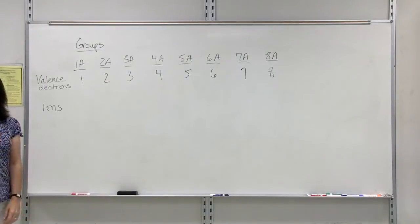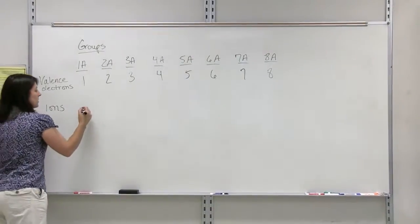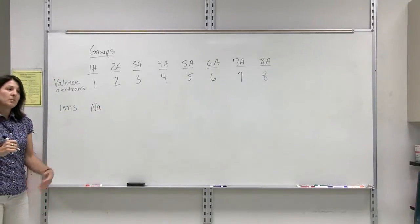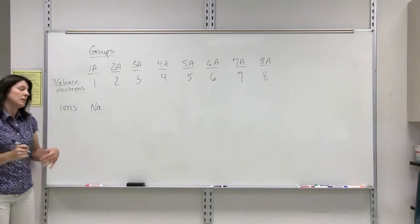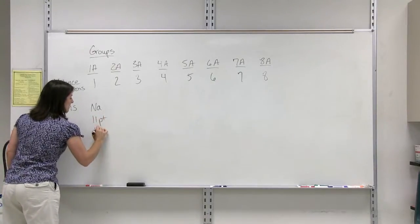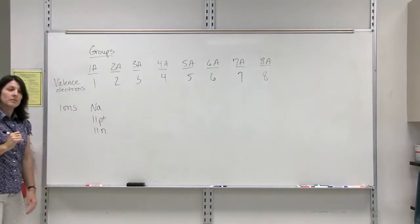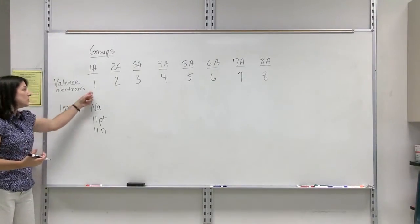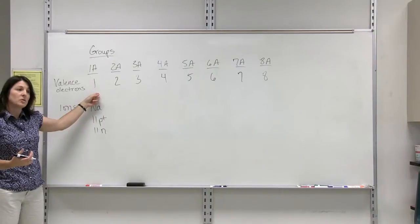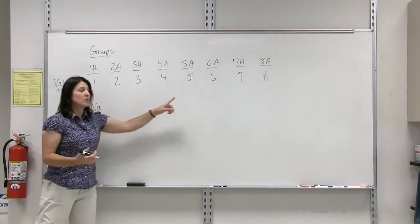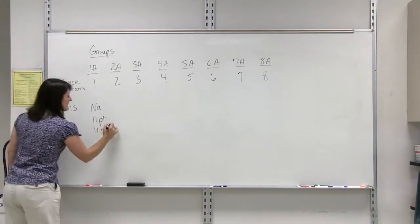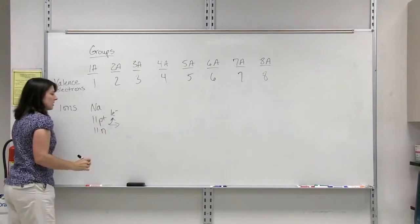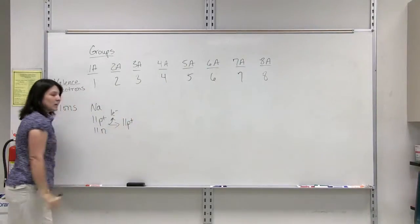For example, group 1A. If we use sodium as an example of a group 1A element, sodium has 11 protons and 11 electrons in a normal neutral atom. Sodium is going to lose its one valence electron so that it looks like the noble gas that precedes it. When it does this, it loses one electron. It's still going to have 11 protons.